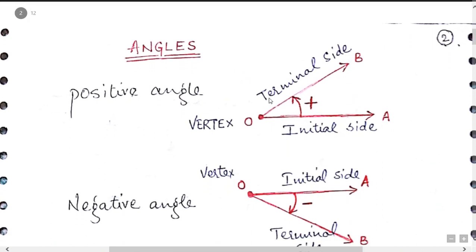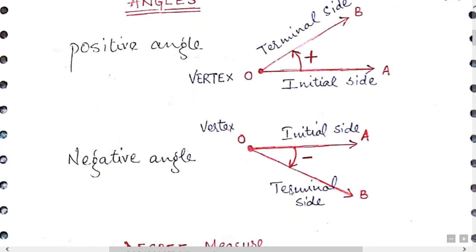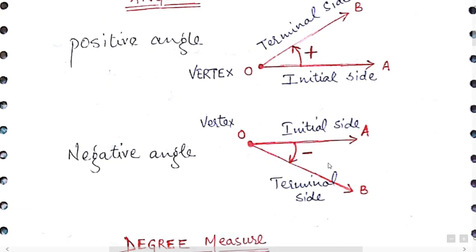Now, what is the meaning of angle? Suppose OA is the initial side and OB is the terminal side. If the movement is anticlockwise, the angle is positive. If the movement is clockwise, the angle is negative.